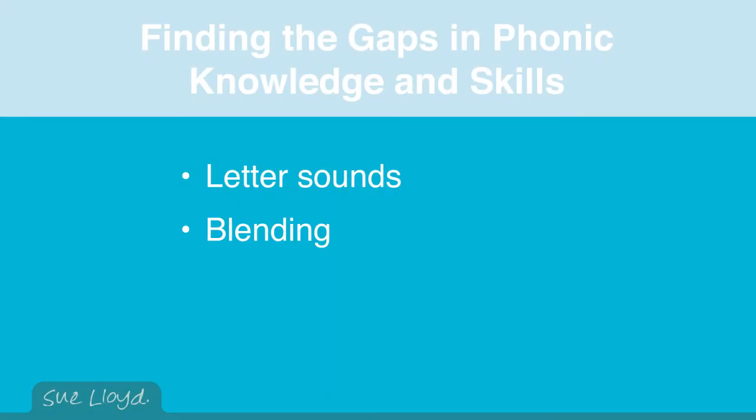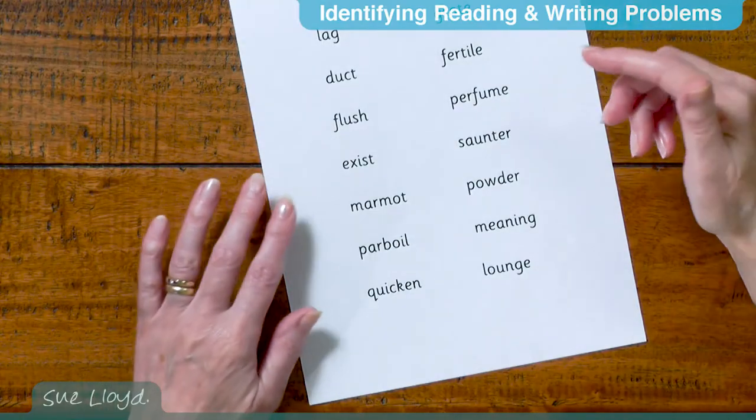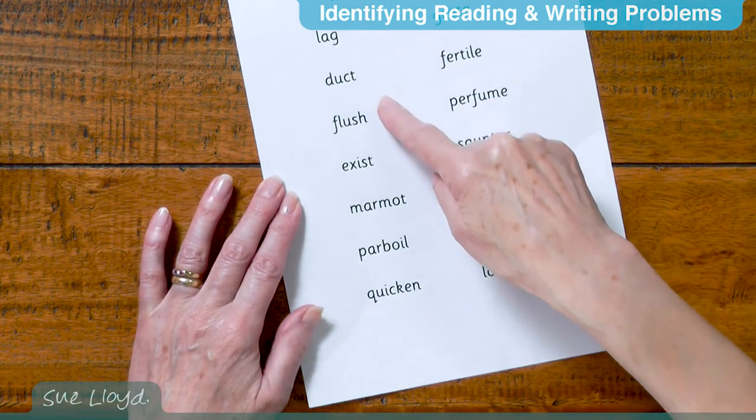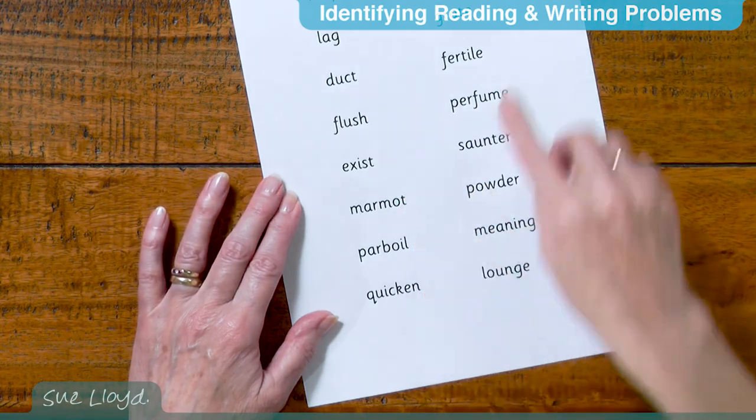The next thing to find out is how well the child is able to work out unknown words. For this assessment it is necessary to have a set of words that are unlikely to be familiar to the child. This usually ensures that the words have not already been memorised and the child, in order to read them, has to blend and decode them. Start with short words and progress to longer ones — simple words they're not likely to have met but which they can decode, and that will tell you a great deal.